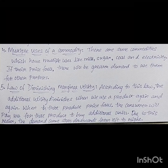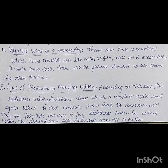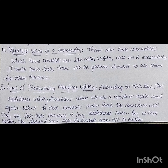The next reason is the law of diminishing marginal utility. Whenever the additional utility diminishes when we use a product again and again, and when that product's price falls, the consumer will pay less for that product to buy additional units. Due to this reason, the demand curve slopes downwards from left to right.